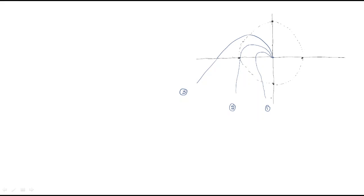In this session we will discuss some more points of the Bode plots. There are three plots: plot one, plot two, and plot three. For any plot, you start from omega equal to 0 and end at omega equal to infinity. This applies to all three plots.